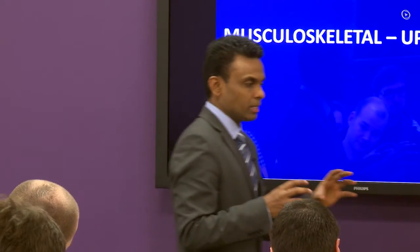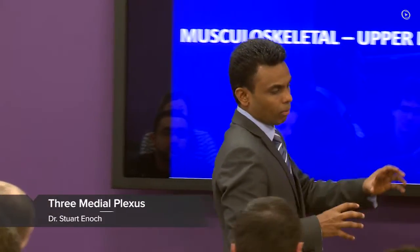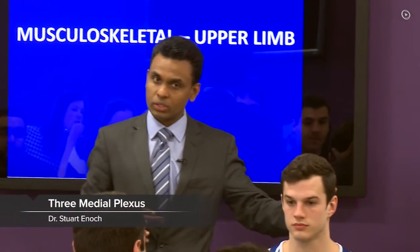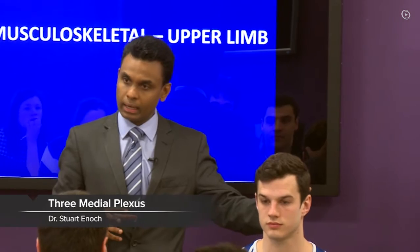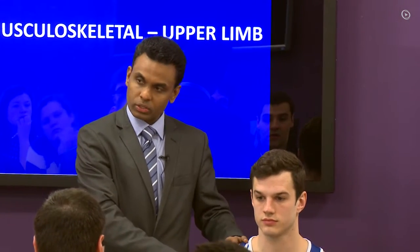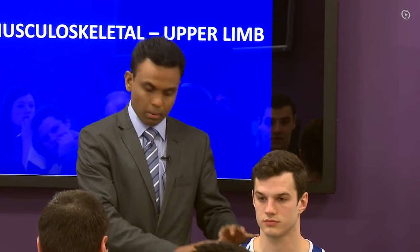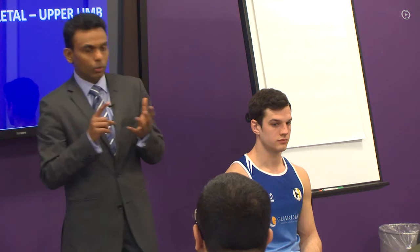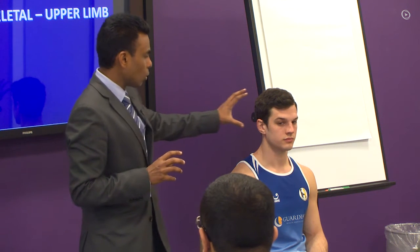You have three major plexuses in the body: the cervical plexus in the head and neck, the brachial plexus for the upper limb, and the lumbosacral plexus — also called the lumbar plexus on its own and the sacral plexus. These three main plexuses cover pretty much all of the function to the head and neck, upper limb, and lower limb.